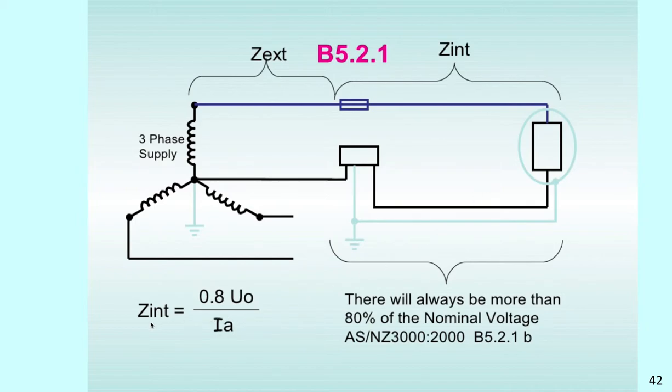So, what we're saying here in this little formula. The Z internal is point eight or eighty percent of the perspective voltage drop. The voltage at the supply which is U0. And the current from the supply. There will always be more than eighty percent of the nominal voltage. So, we'll be safe to be able to use the calc at eighty percent.